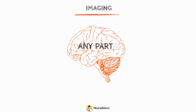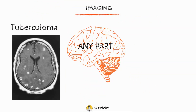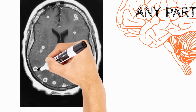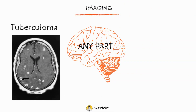A tuberculoma might form in any part of the brain. On T2-weighted or FLAIR images, a hypointense core is surrounded by hyperintense rim, correlating with necrosis and enhanced cellularity. The lesion appears hypointense or isointense on T1-weighted imaging compared to brain parenchyma. Hypointensity without enhancement is seen before the lesion becomes encapsulated.